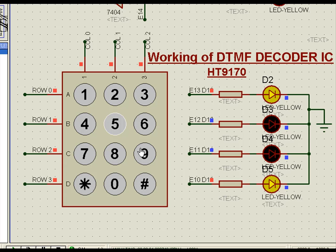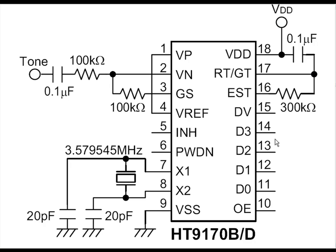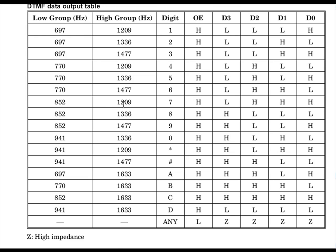This is the working of the DTMF decoder IC — when it receives the tone command at this input, it delivers this kind of digital output, as per the table. These are the tone commands which are coming in, and those tone commands result in this kind of output. For digit 0, it also gives high, low, high, low — that is 8 plus 2 equals 10 — because 10 pulses have to go as far as the telephone is concerned.